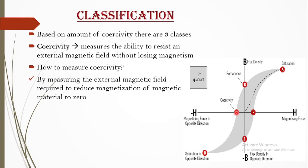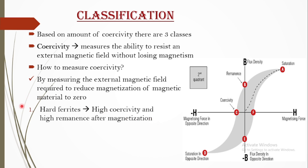We have studied these details while studying the properties of ferromagnets, which are similar for ferrites, and the material traces a hysteresis loop. After understanding coercivity, let us move on to the three types based on this parameter. Coercivity and retentivity or remanence are the most important parameters when studying applications of ferrites. Based on coercivity, the first class is hard ferrites, which have high coercivity and high remanence after magnetization.